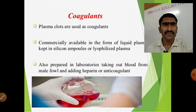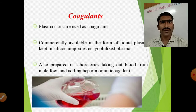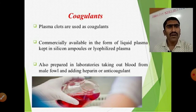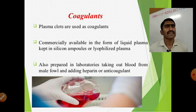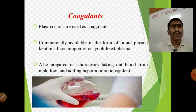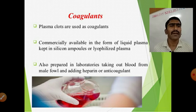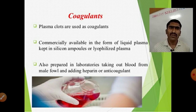Coagulants: plasma clots are used as coagulants. Commercially, plasma is available in silicon ampoules or as lyophilized plasma. It is also prepared in laboratories by taking blood from male fowl and adding heparin or an anticoagulant agent.